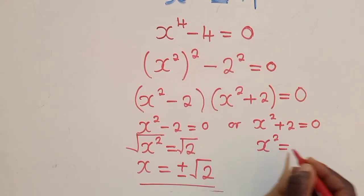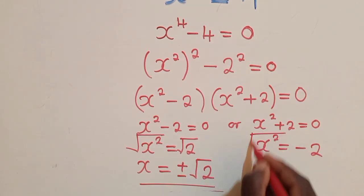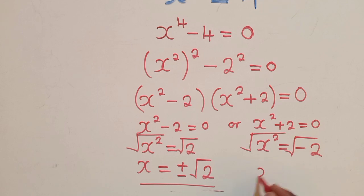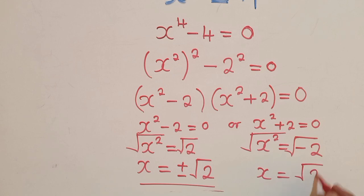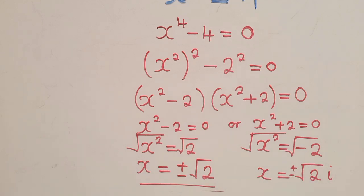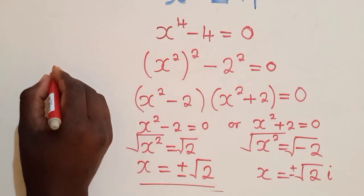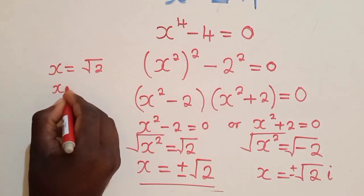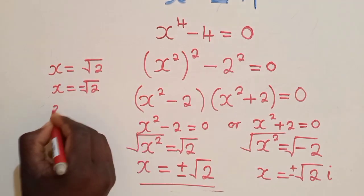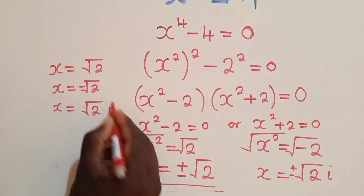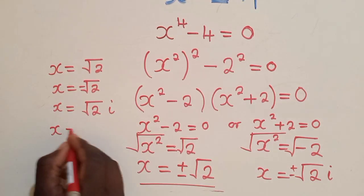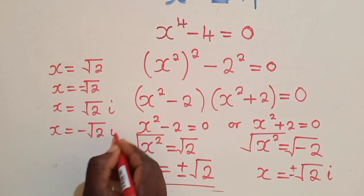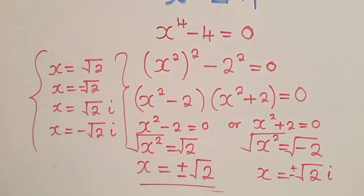Here also you do the same — you find the square root. This is what we call a complex number. So it will be positive or negative 2i, meaning complex — you are dealing with complex numbers. So the solutions of x are: x equals root of 2, x equals negative root of 2, x equals 2i, and x equals negative 2i. Those are the four solutions.